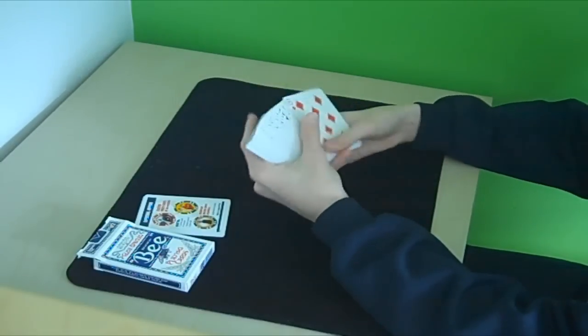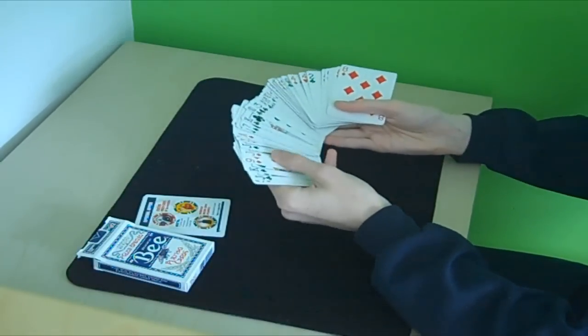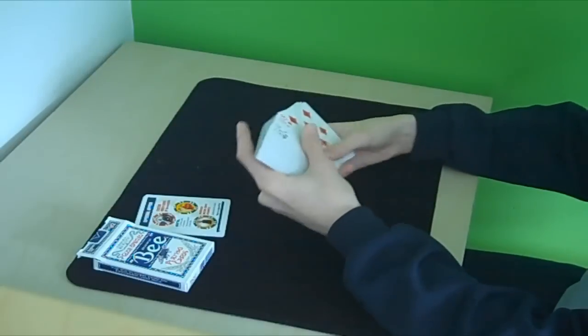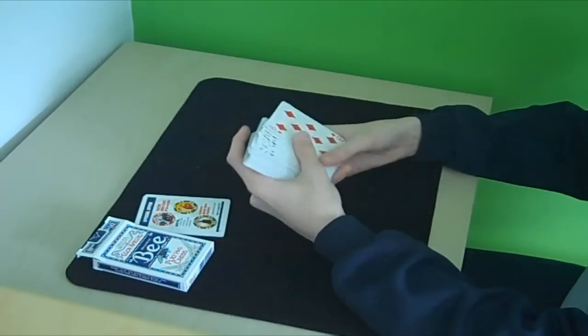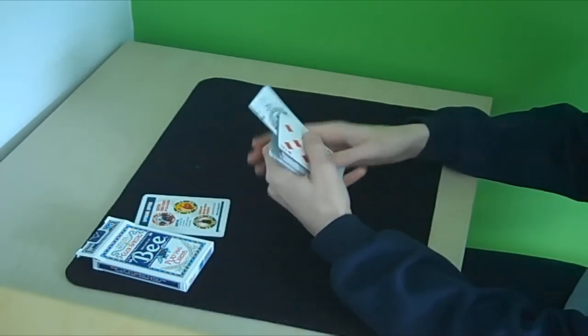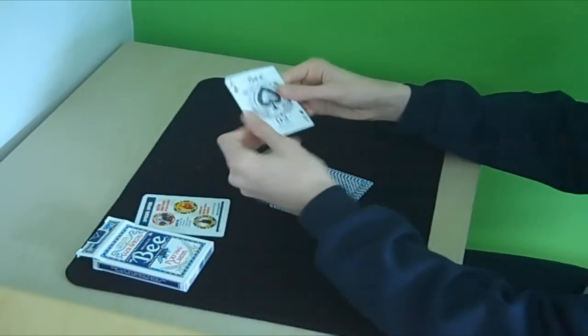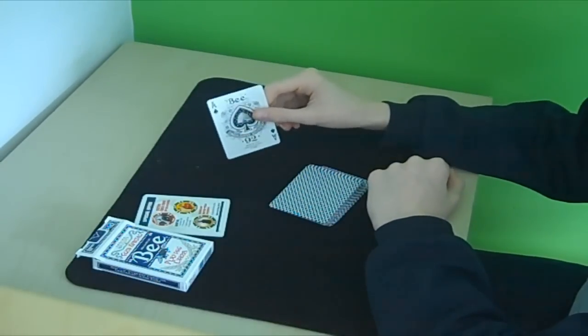Now the faces of these cards are pretty normal. They just look like normal bicycle faces. The court cards and everything. As you can see, everyone except for the ace of spades. Now this ace of spades is actually my favorite ace of spades out of any deck.